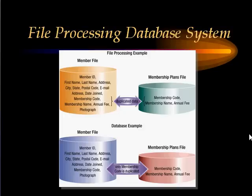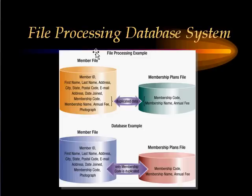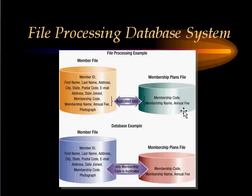Here is an example showing the member file and the membership plans file. The first example shows the file processing system and the second example depicts the database management system. In the file processing system, different files are kept in the database, each containing the entire data about a particular object. In this case, we keep two files: the member file and the membership file, each storing all related information.